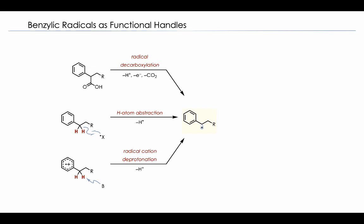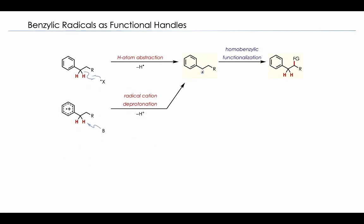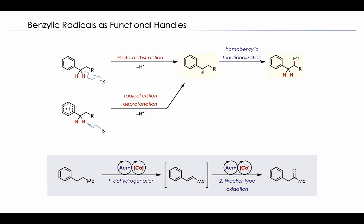And while we wanted to form functionality at the homobenzylic position rather than the benzylic position, we thought maybe formation of this radical can actually act as a functional handle to install functionality at the homobenzylic position. And we hypothesized the way that this would occur would be through a CH-functionalization pathway via either H-atom abstraction or via radical cation deprotonation. And so we envisioned utilizing the dual catalytic system to first perform an in-situ dehydrogenation to access a styrene intermediate wherein then the same pot, it can be converted to the homobenzylic ketone.